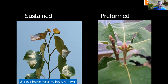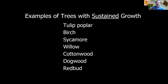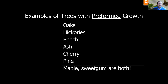The zigzag branching pattern is common with elm, birch, and willow. Examples of trees with sustained growth include tulip poplar, birch, sycamore, willow, cottonwood, dogwood, and redbud — these can continue flushing leaves throughout the growing season. Trees with preformed growth — oaks, hickories, beech, ash, cherry, and pine — must go through a resting stage with bud formation. Maple and sweet gum are a unique case in that they have both preformed and sustained growth, which is unusual.